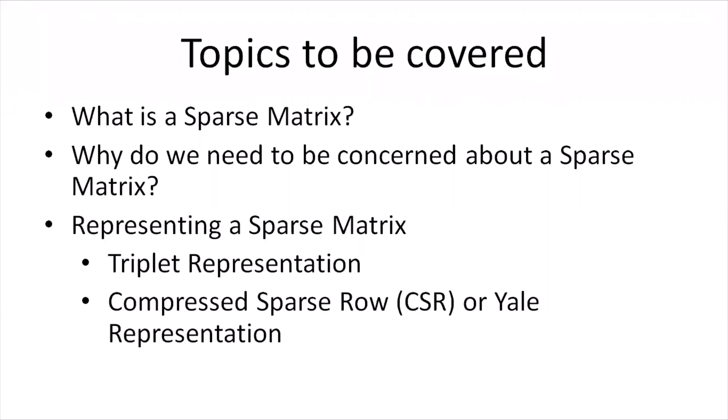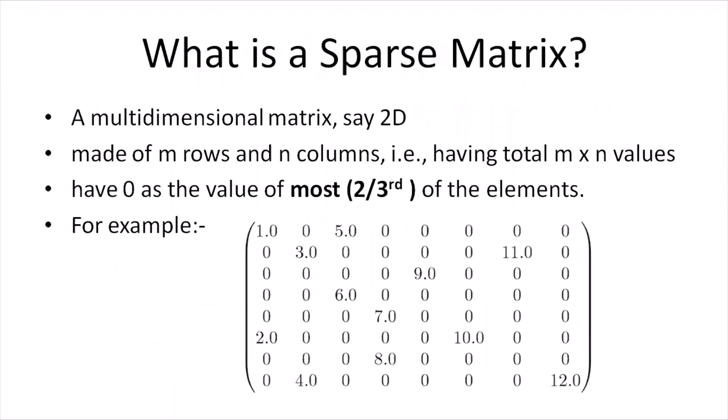A sparse matrix is a matrix that has most of its elements as zero. Typically, if a matrix has at least two-thirds of its elements as zero, it is called a sparse matrix.